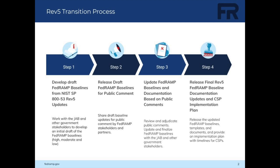After we've completed our updates, we move into Step 2: release draft FedRAMP baselines for public comment. FedRAMP will publicly share the draft updates with our stakeholder community to review and provide comments and feedback. We will also work with our government partners to gather their input. Based on the extensiveness of the updates to the baselines, the public comment period could range from 90 to 120 days, but the PMO will ensure there is adequate time for all interested parties to provide comments.